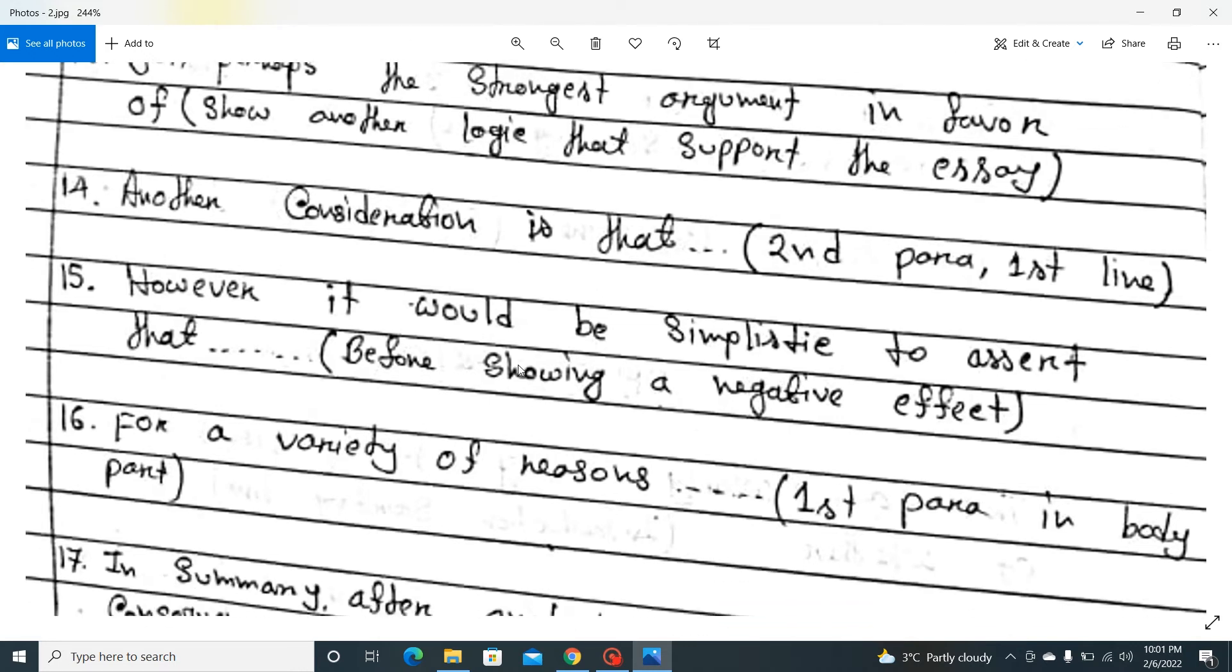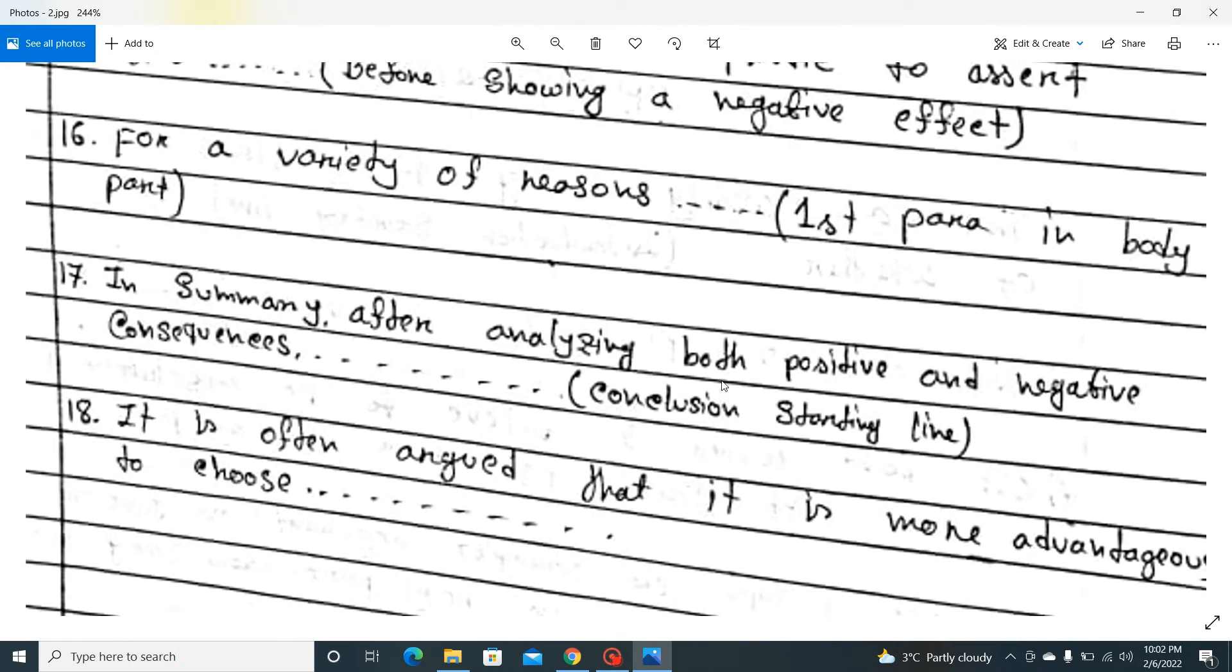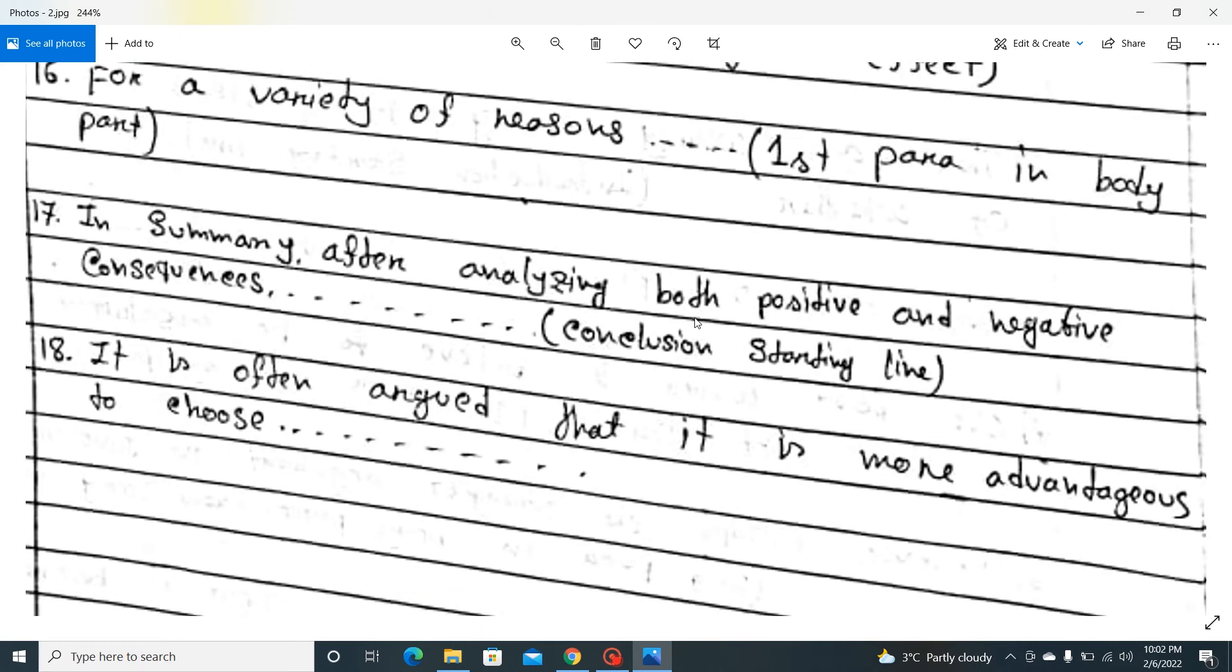However, it would be simplistic to assert that, before showing a negative effect. Again, counter logic can show a negative effect. However, it would be simplistic to assert that globalization has a negative impact too. Something like that. For a variety of reasons, first paragraph in body part. Normally, normally it is used in first paragraph. In summary, after analyzing both positive and negative consequences, conclusion starting line. Very simple. It is often argued that it is more advantageous to choose. It is often argued that it is more advantageous to choose.